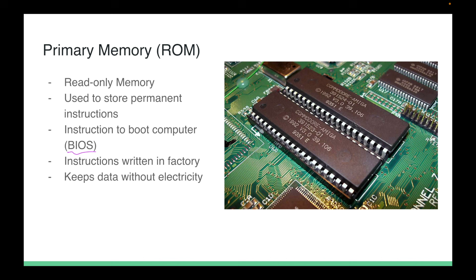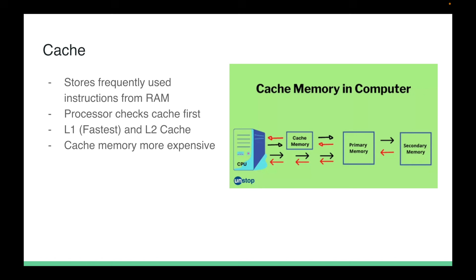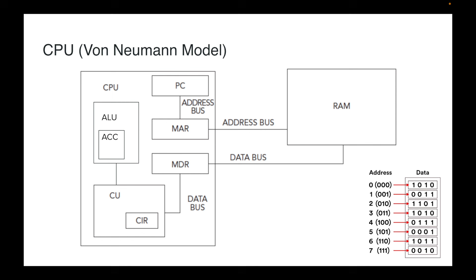Cache stores frequently used instructions from RAM. The CPU checks the cache first and sees whether what it needs is in the cache; if not, it goes to primary memory. The cache can speed things up because it is always closer to the CPU, so it is much faster for the CPU to retrieve data from cache rather than going all the way to primary memory. The cache sits between the CPU and the RAM.